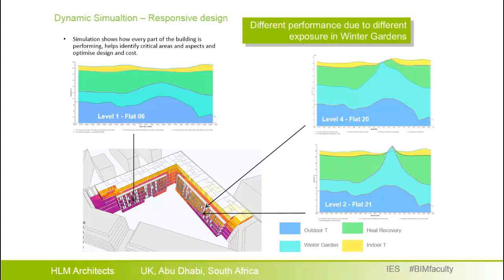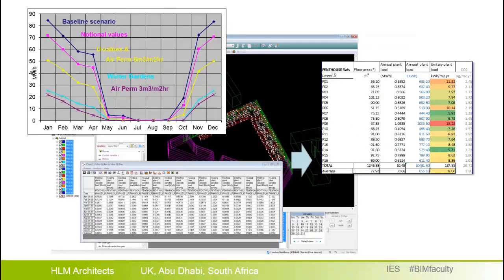On the right hand side there is a peak due to solar radiation in the winter garden, and on the top one — the top floor apartment — the peak is cut, due to the fact that somebody has opened the window there. The output performance is then taken back into the BIM environment as support information for design, which is a key element in the BIM process.